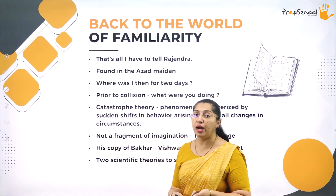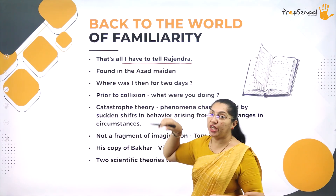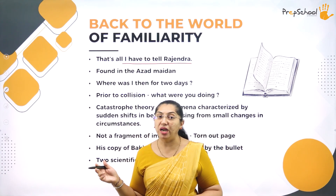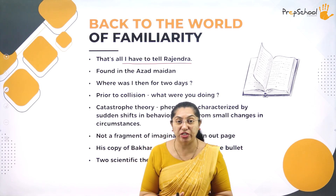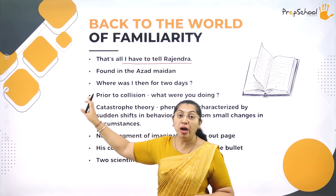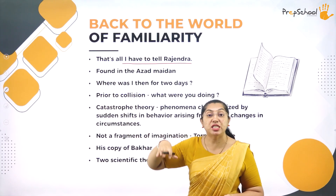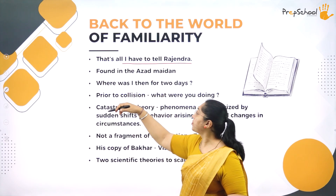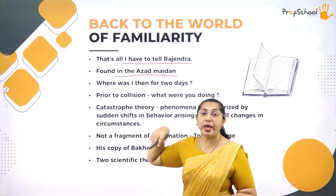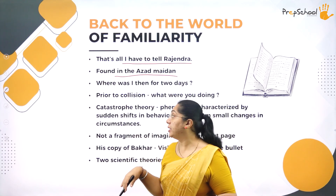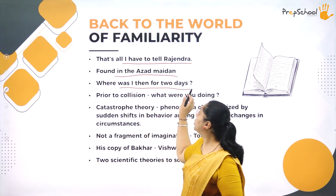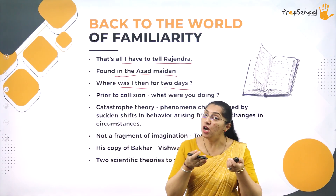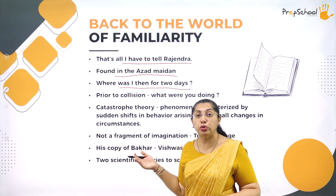Gangadhar Pant then comes out of his coma and tells Rajendra everything that happened. He is found in the Azad Maidan. He questions: 'Where was I for the past two days? Where did I go?' — because he doesn't even remember being in a coma. He asks where he went for those two days.